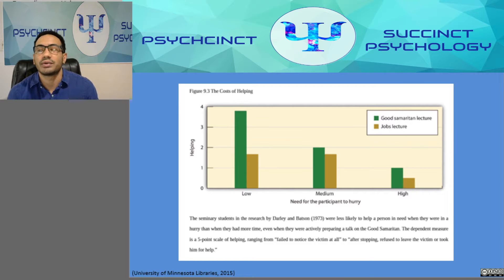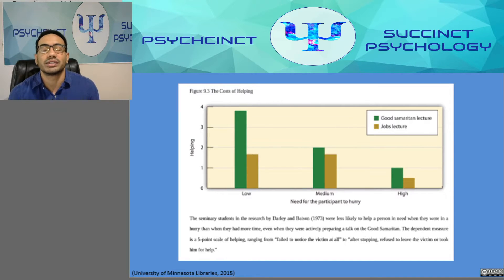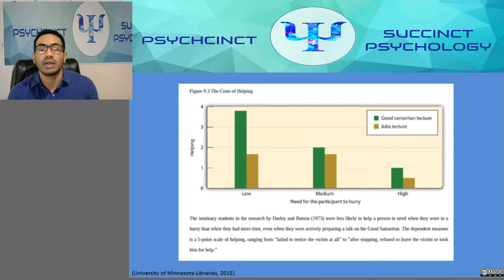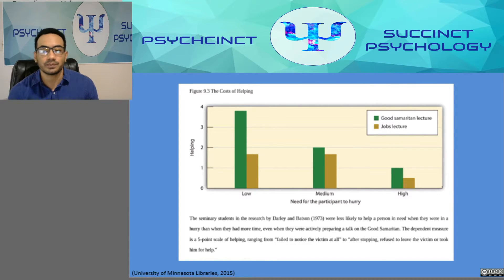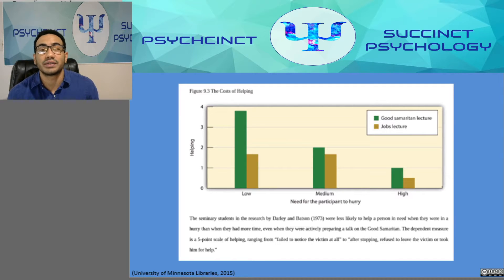The principles of social learning suggest people are more likely to help when they receive a reward for doing so. Parents realize this — children who share their toys are praised, while selfish children are reprimanded. Research also finds we're more likely to help attractive rather than unattractive people of the opposite sex, again probably because it's rewarding to do so.